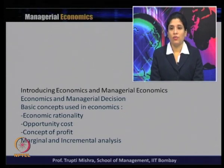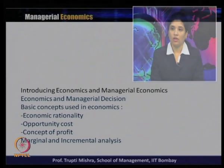Ceteris paribus states that other than the study variable, all other variables must remain constant. The second assumption, economic rationality, holds that all economic agents — consumers, producers, sellers — must be rational in their decisions and behavior. We then discussed opportunity cost, which is the benefit from the next best alternative, arising because resources are scarce relative to unlimited wants.